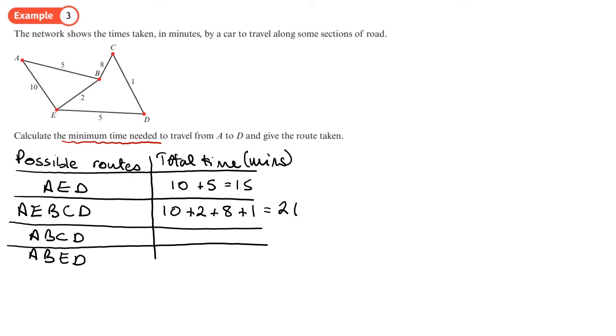So A to B is 5, B to C is 8, C to D is 1. So that gives a total time of 14 minutes. And then A, B, E, D will be 5 plus 2 plus 5 gives a total time of 12 minutes.